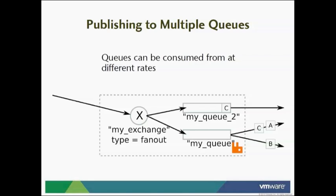AMQP is general enough to let you declare resources on the fly, but if you'd rather have those be pre-declared, then this is a good solution for putting that configuration in place ahead of time. It has an HTTP API and a command line tool that makes use of that API. Hopefully later on I'll be able to show you some more details about this.